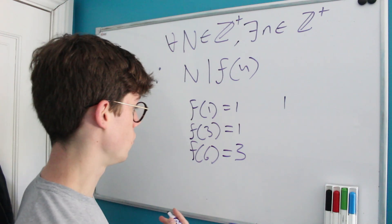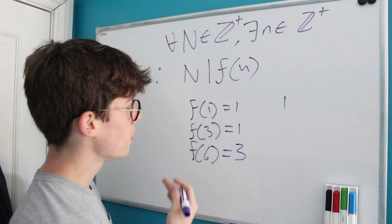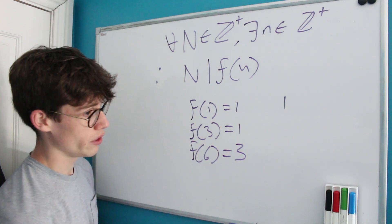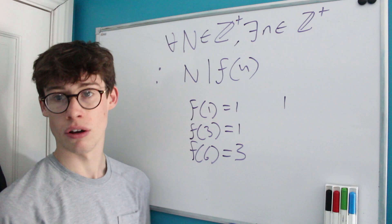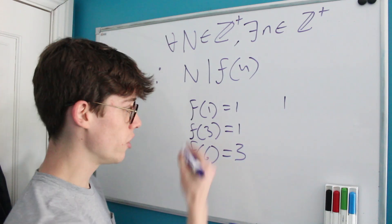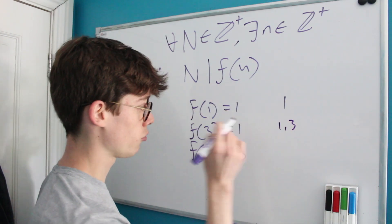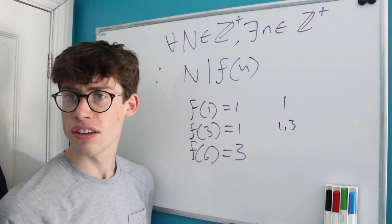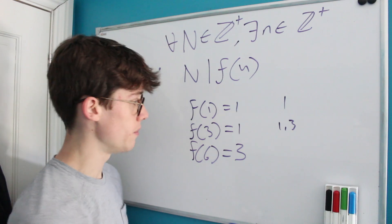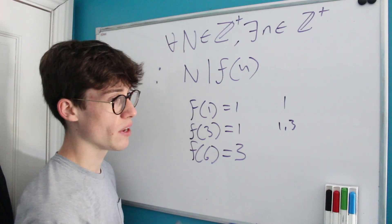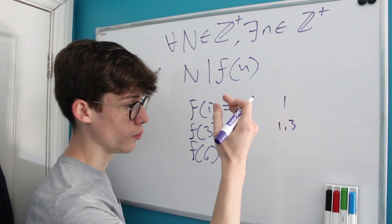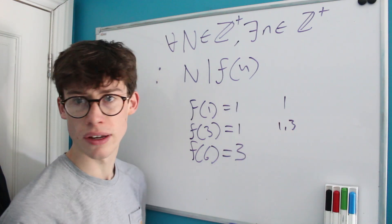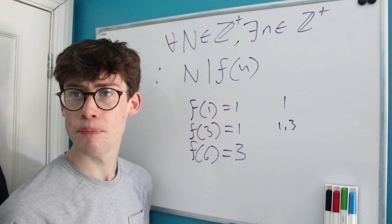To give some intuition: all lists have to start with 1 and end with our input. For f(3), the only list is {1, 3} — there's nothing else that would divide 3 apart from 1, given that 3 is prime.